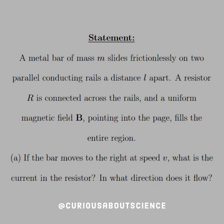A metal bar of mass M slides frictionlessly on two parallel conducting rails a distance L apart. A resistor R is connected across the rails, and a uniform magnetic field B pointing into the page fills the entire region. If the bar moves to the right at speed V, what is the current in the resistor? In what direction does it flow?